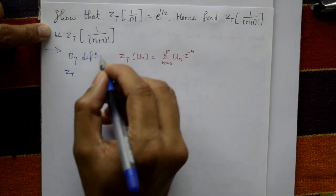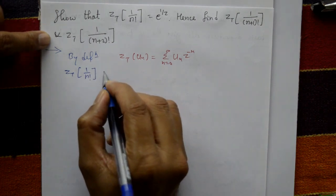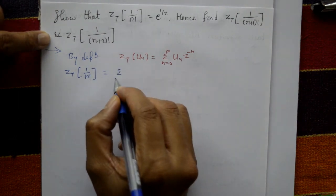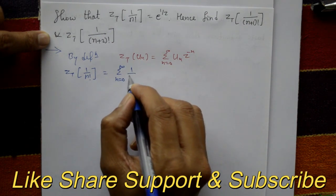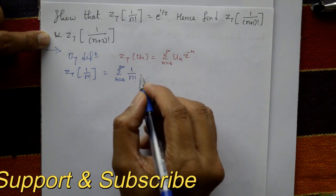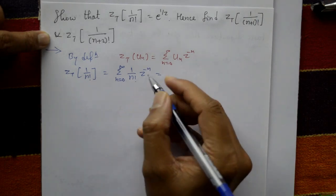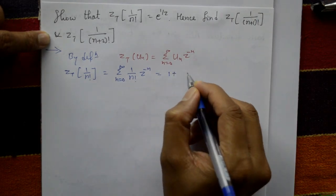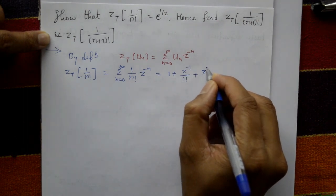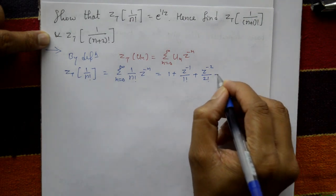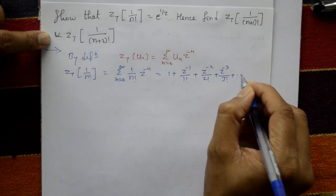Now Z transform of u_n means 1 upon n factorial. Using the definition, this is summation n equals 0 to infinity of 1 upon n factorial times Z to the minus n. Putting n equal to 0, 1, 2, 3... we get 1 plus Z to the minus 1 upon 1 factorial plus Z to the minus 2 upon 2 factorial plus Z to the minus 3 upon 3 factorial, plus so on.